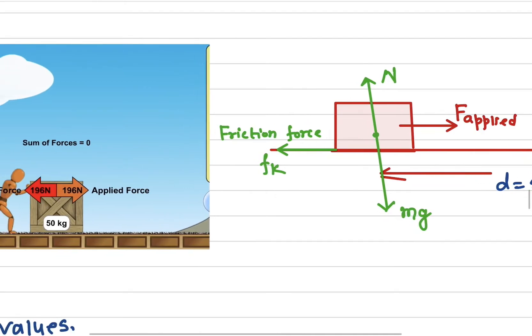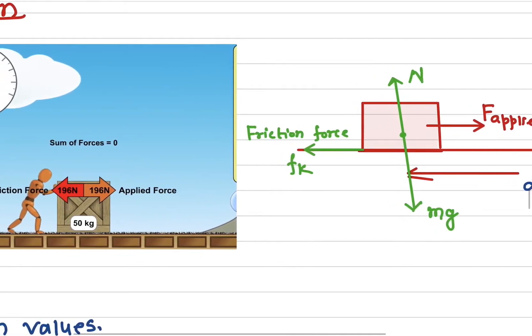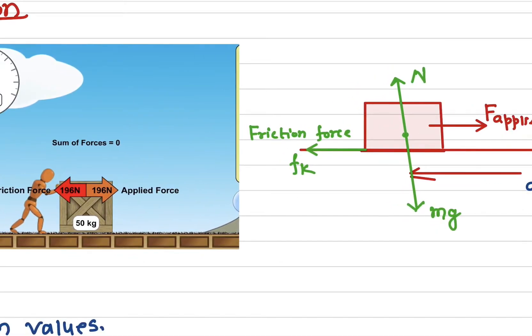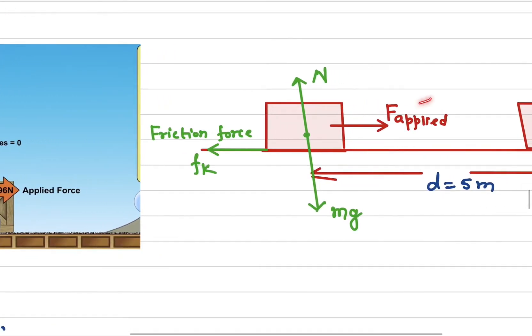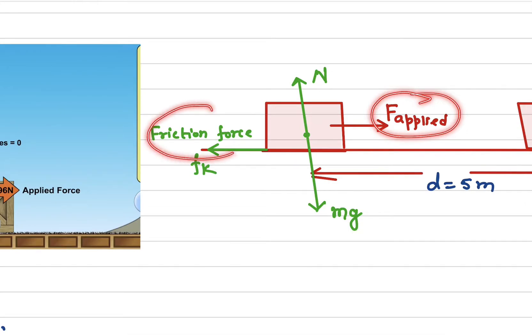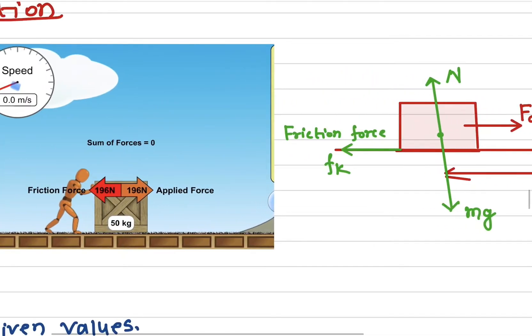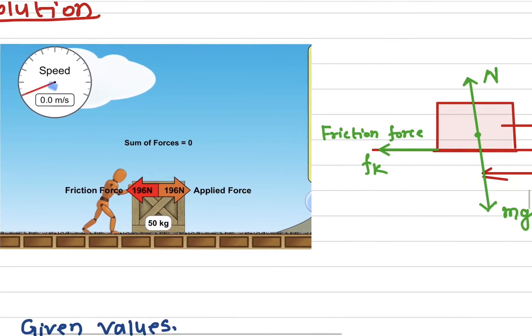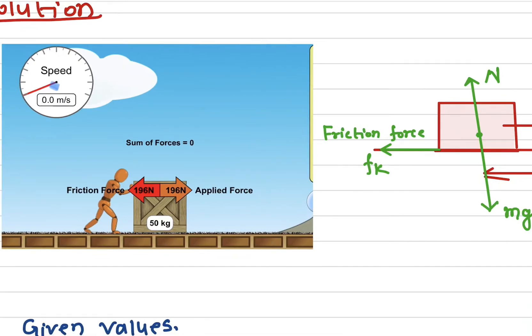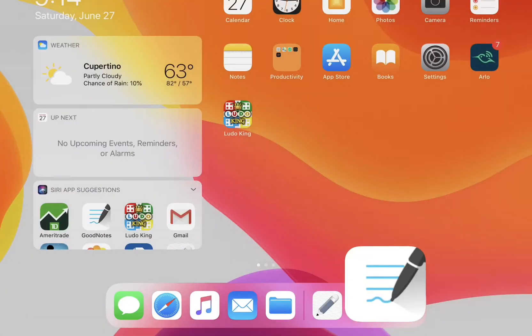In other words, as the object is moving with a constant speed, the applied force and the friction force must be exactly equal. Let me demonstrate this using a simulation.